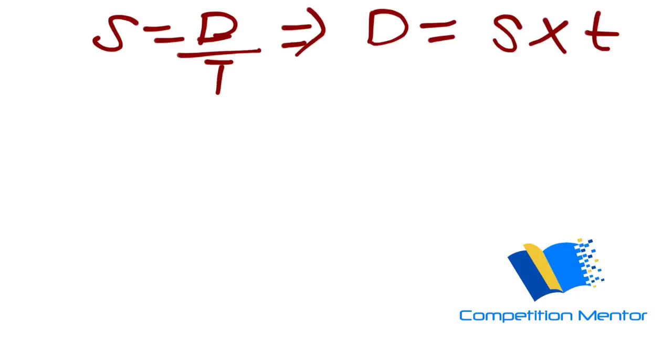See in this entire TSD, you know that speed equals distance upon time, or you can write D equals S into T. That's what we have memorized always and we have solved questions in our basic classes and schools.